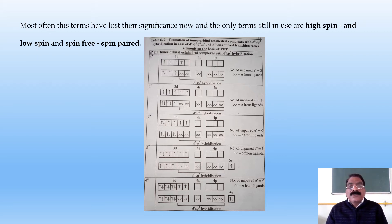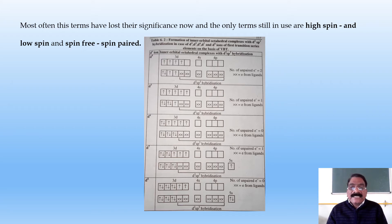The formation of inner orbital octahedral complexes with d²sp³ hybridization for d1, d4, d5, d6, d7, and d8 ions of first transition series elements on the basis of VBT is shown here. For a d4 ion, it shows d²sp³ hybridization with only two unpaired electrons — one electron gets paired. For d5, there are five unpaired electrons in the ground state, but in the hybridized state two electrons are shifted into the 3d orbital, leaving only one unpaired electron.